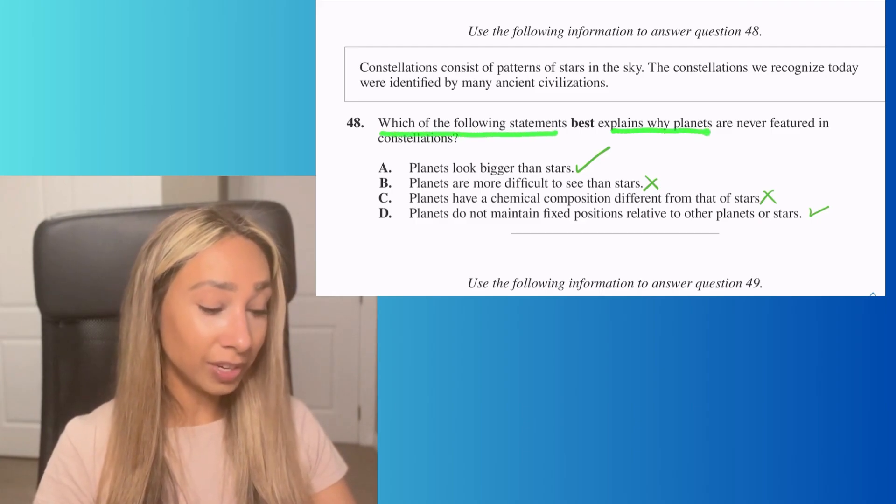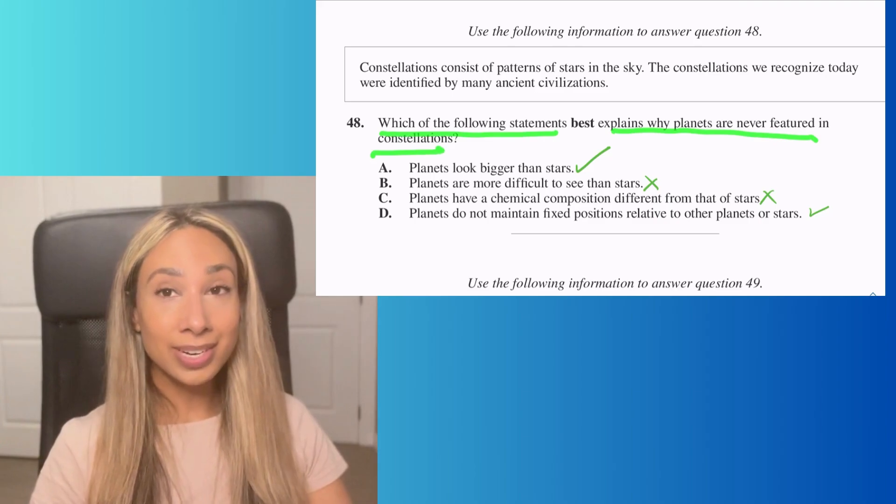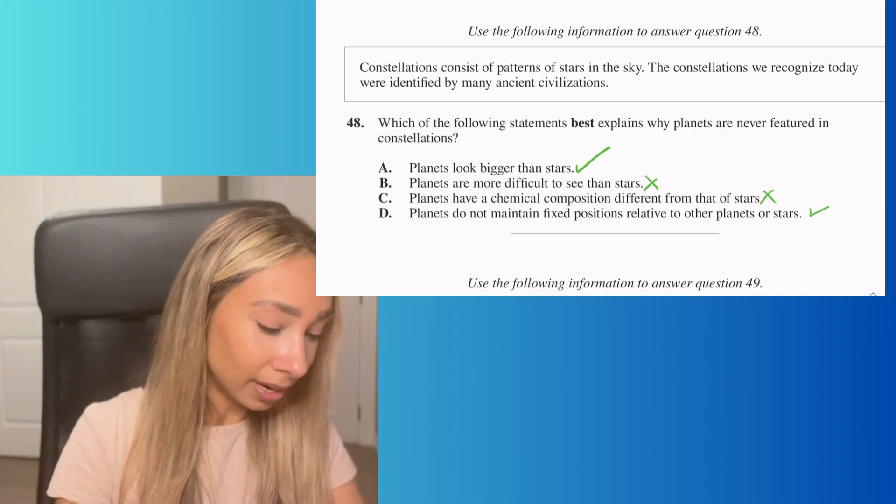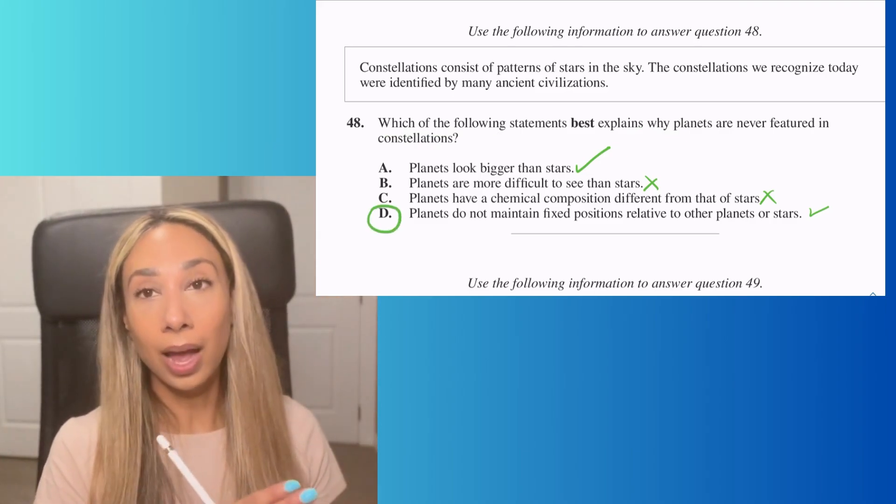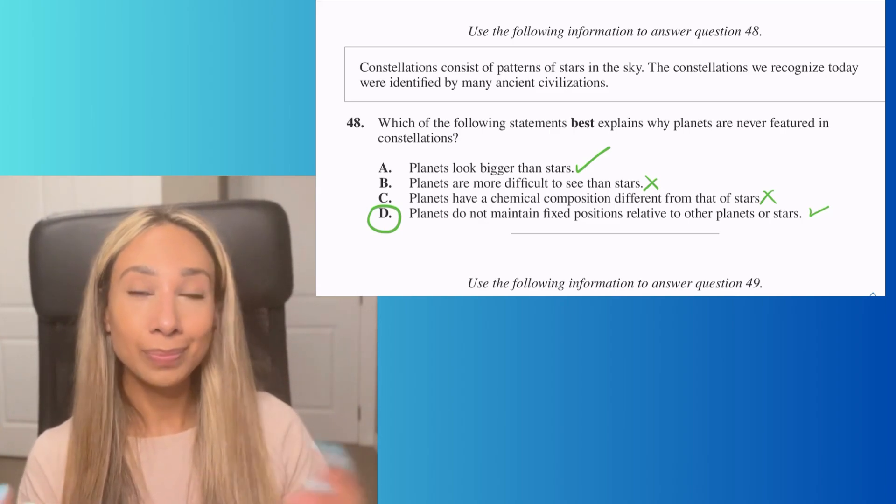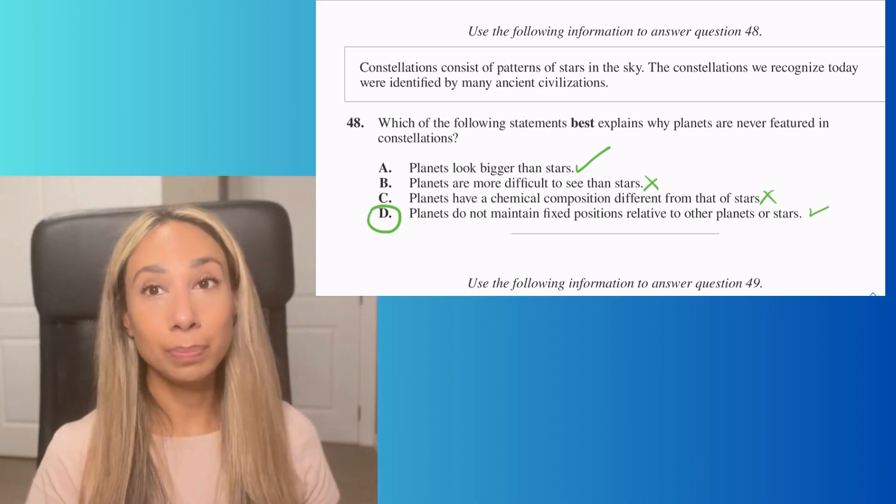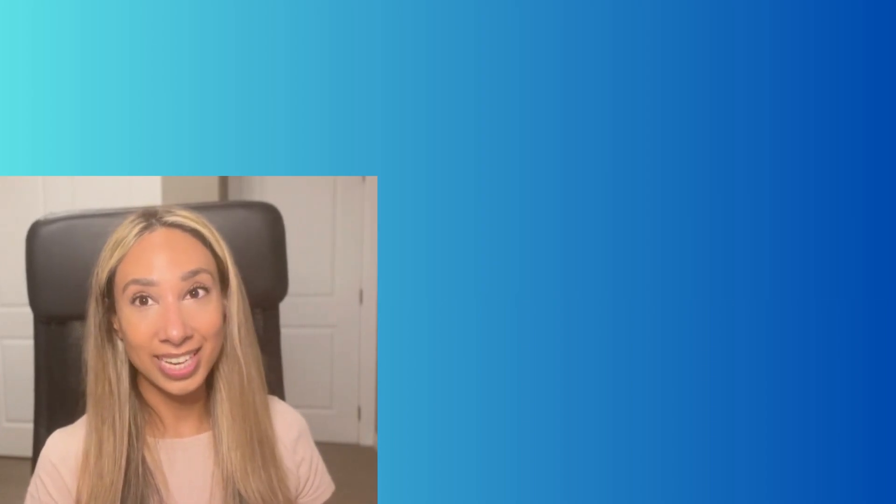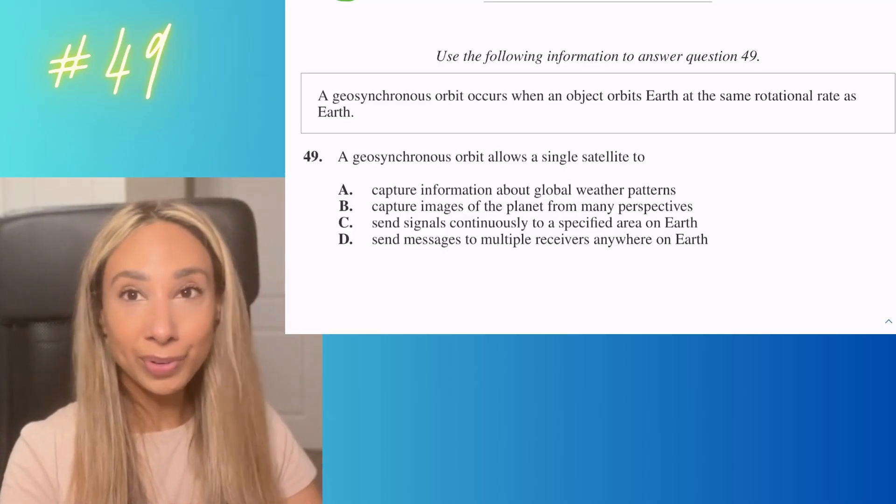Planets do not maintain a fixed position relative to other planets or stars—that's true because planets rotate around the Sun. The best explanation is option D. If they're not fixed, when we look at the sky at different times of the year, we won't see them in the same place. That wouldn't make sense for observations, especially for ancient civilizations.